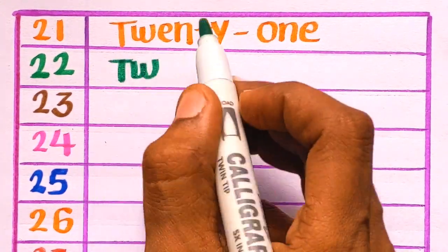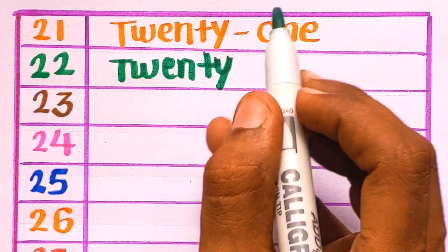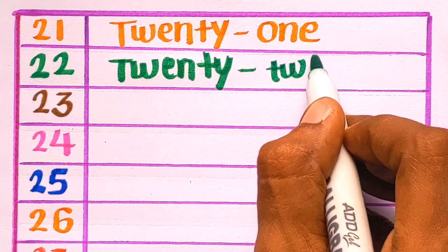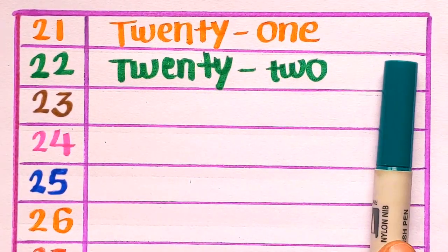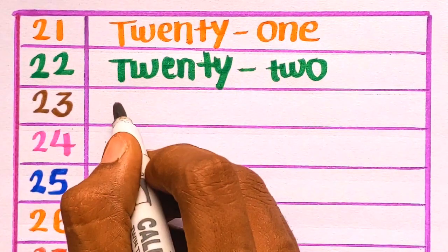T-W-E-N-T-Y-22. T-W-O-22. Green color. Next is 2-3-23.